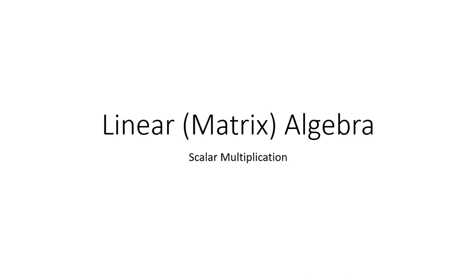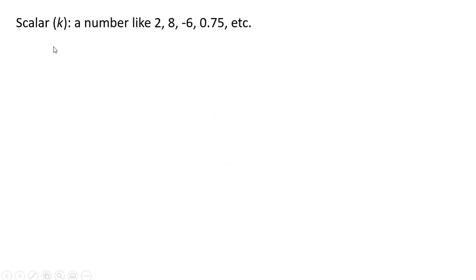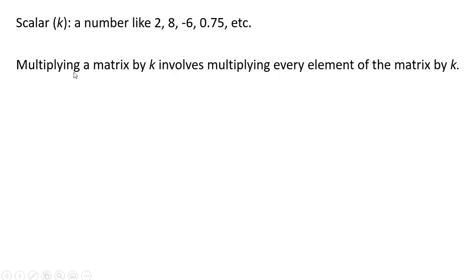This video will look at scalar multiplication. A scalar is a number like 2, 8, minus 6, 0.75 — just a simple number. Multiplying a matrix by K, the scalar, involves multiplying every element of the matrix by the scalar.